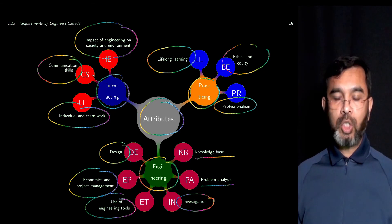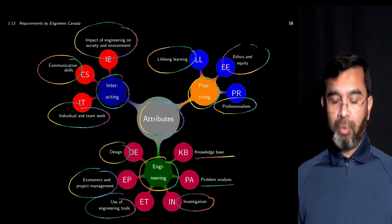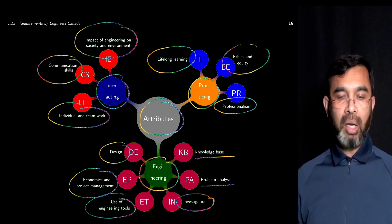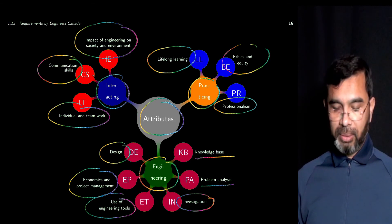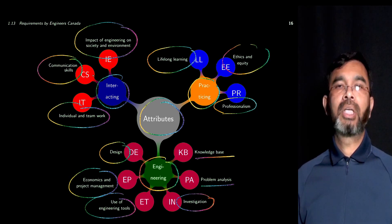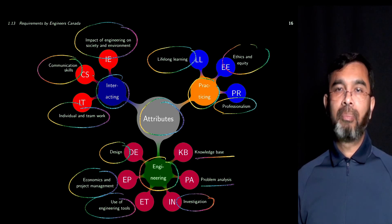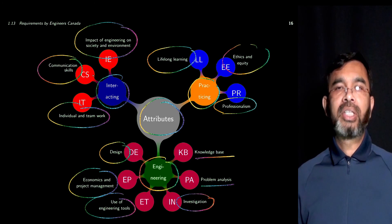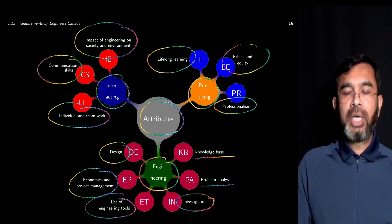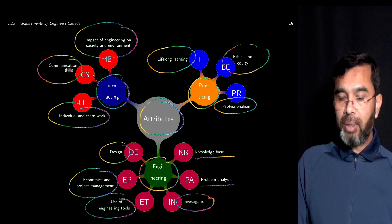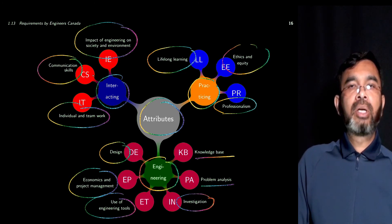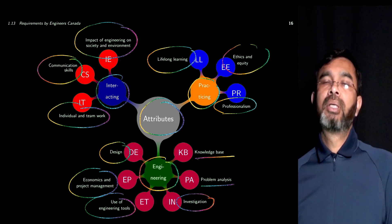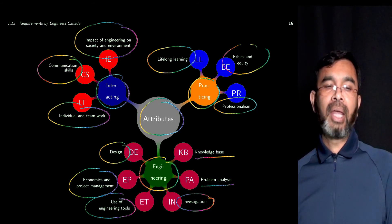As a future graduate, you should think about these aspects — not only the contents of the course, but how these different attributes are developed through understanding of the course material. In summary, in this session we learned about what is engineering, what is process engineering, what engineers are responsible for, how this course is positioned within the process engineering program, and what attributes graduates should have.